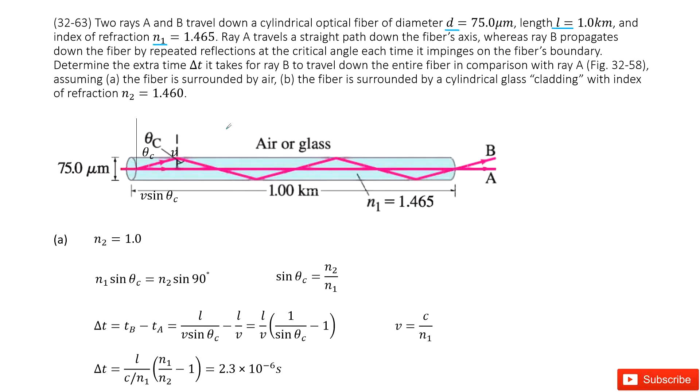Ray A travels a straight path, and ray B travels by total internal reflection. They give you the keyword critical angle each time, which means each reflection is a total reflection. We need to determine the time difference delta T for ray B compared with ray A.